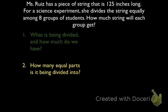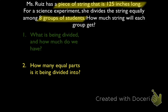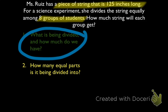As I'm looking at this word problem, I can see there are two things to keep track of. There's a piece of string that's going to be 125 inches long, and there are eight groups of students. So we have two things: string and people. It doesn't make sense to divide people into equal parts, so string is probably going to be what we're going to divide.